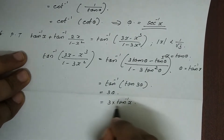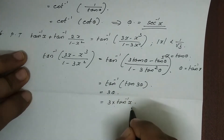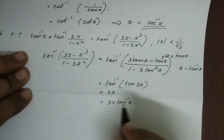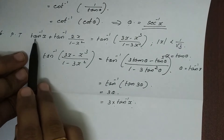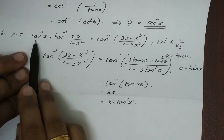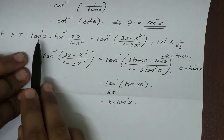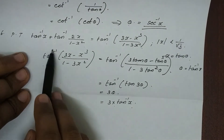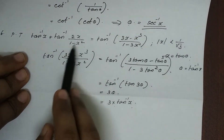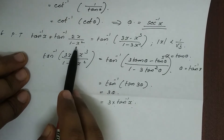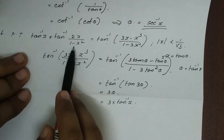Then we have RHS equal to 3 into tan inverse x, and now we have LHS equal to tan inverse x plus tan inverse 2x divided by 1 minus x squared.